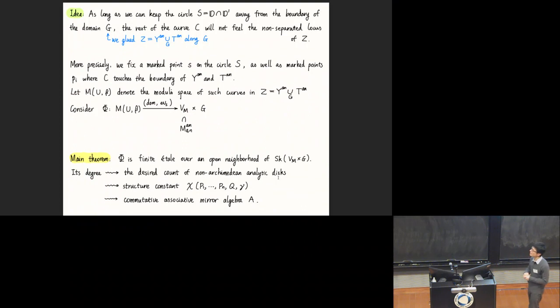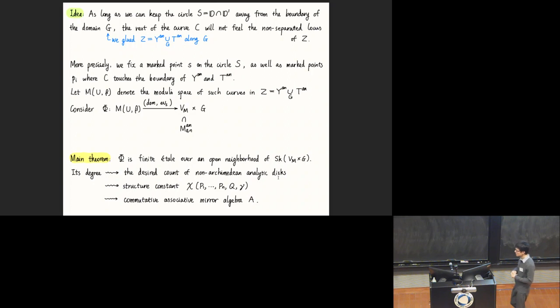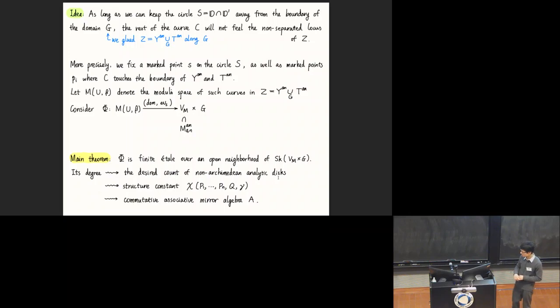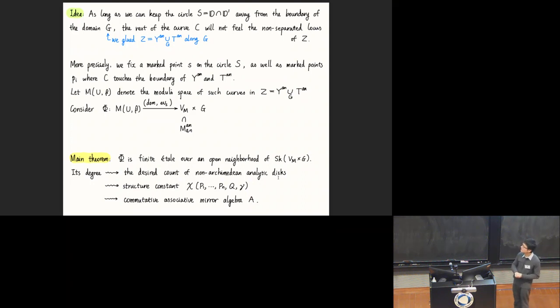The main theorem is that this map is really nice—it's a finite étale map over an open neighborhood of the essential skeleton of the target. Once it's finite étale, we can take its degree, which will be a non-negative integer. We show that it gives the desired count of non-Archimedean analytic disks. Furthermore, the desired count is exactly the structural constants we are looking for, and they give rise to a commutative associative mirror algebra A. If we take Spec of A, we are supposed to get the mirror variety by this construction.